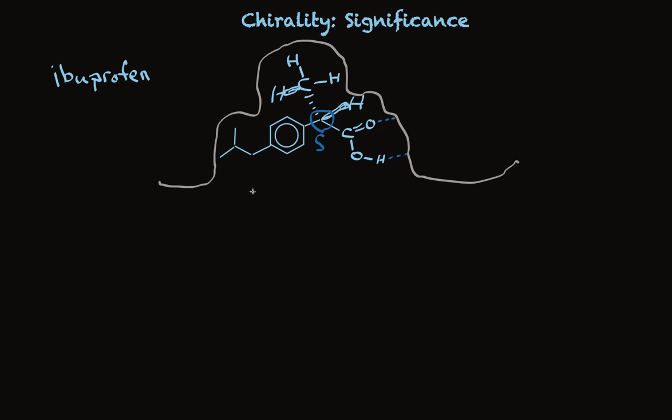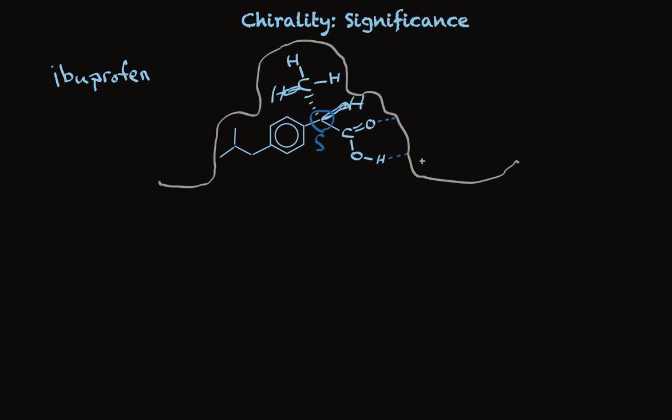While the other enantiomer isn't effective, and it's easy to understand why. Take a look at how the other enantiomer would interact with this same protein. This R-stereoisomer can't enter and bind in the same way with this protein and block its activity because it doesn't fit in the site the same way.